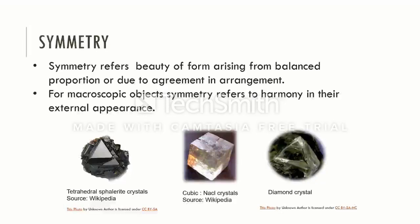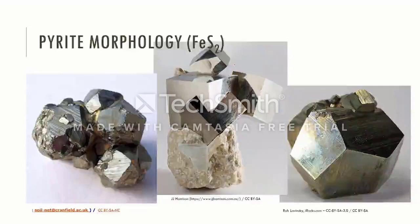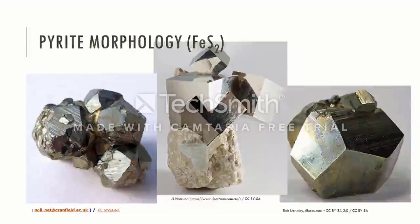For macroscopic objects, symmetry refers to harmony in their external appearance. We find regular shaped objects beautiful. In nature, countless numbers of beautiful appearances are shown by crystals. Although most of the time we have an aggregate of several crystals, even a single crystal can grow in many different shapes.